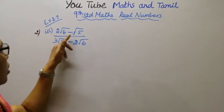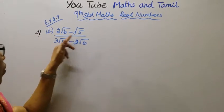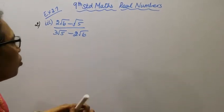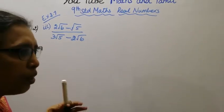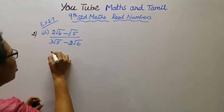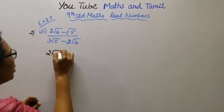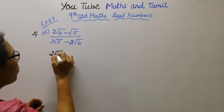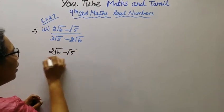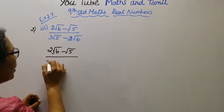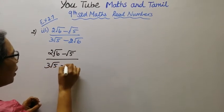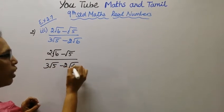The problem is: 2 root 6 minus root 5 divided by 3 root 5 minus 2 root 6.